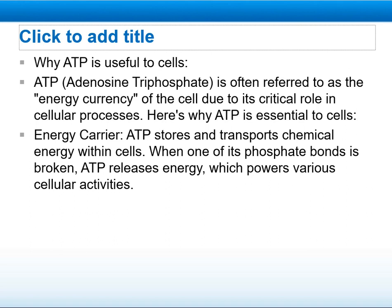Firstly, why ATP is useful to cells. ATP is often referred to as the energy currency of the cell due to its critical role in cellular processes. Here is why ATP is essential to cells. It is an energy carrier: ATP stores and transports chemical energy within cells. When one of its phosphate bonds is broken, ATP releases energy which powers various cellular activities.